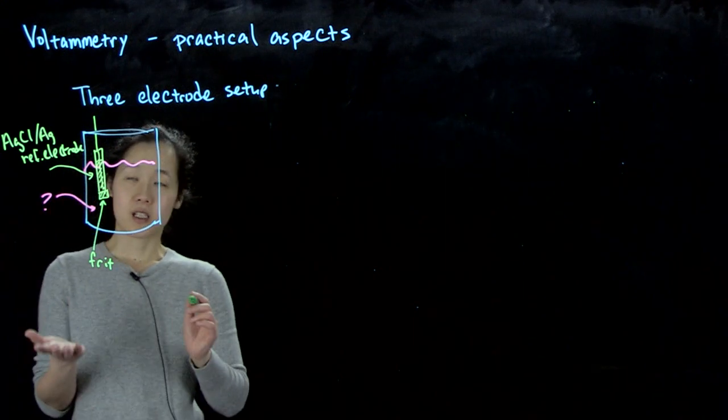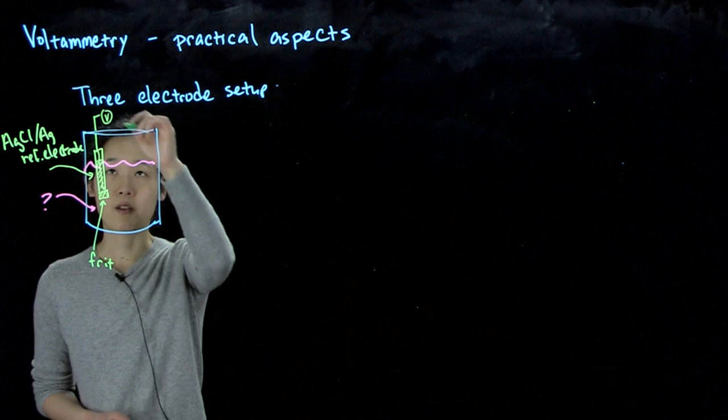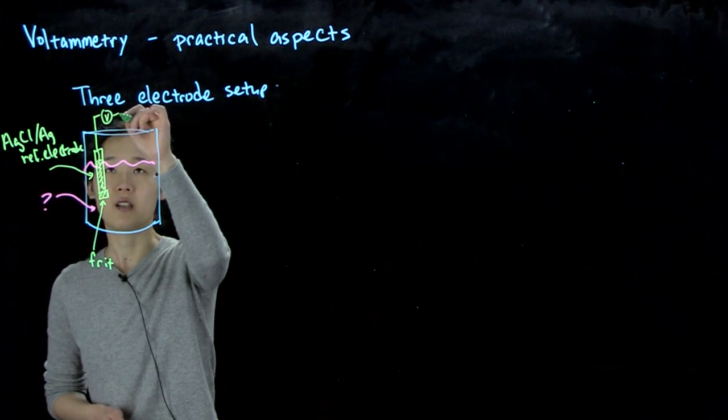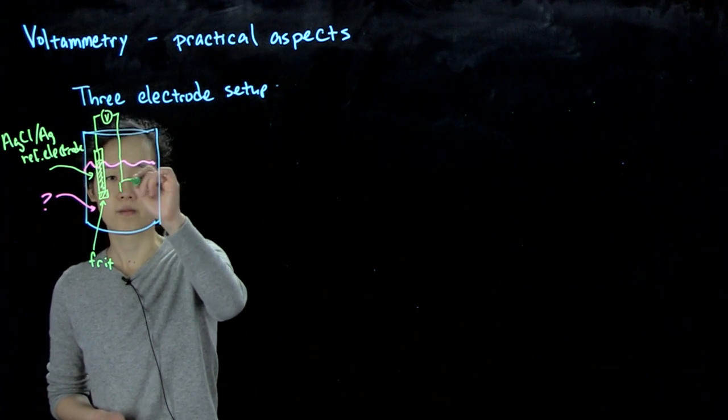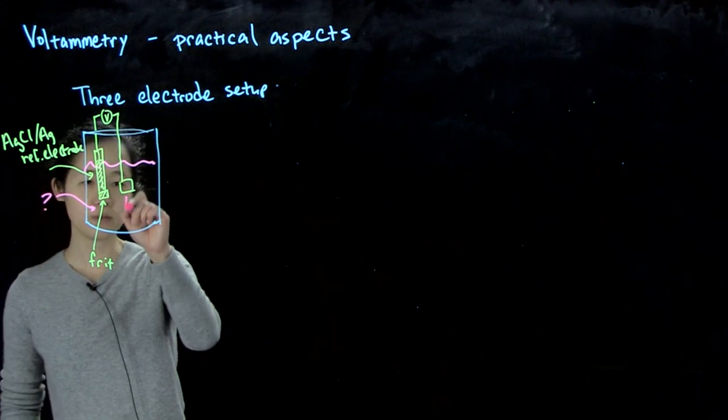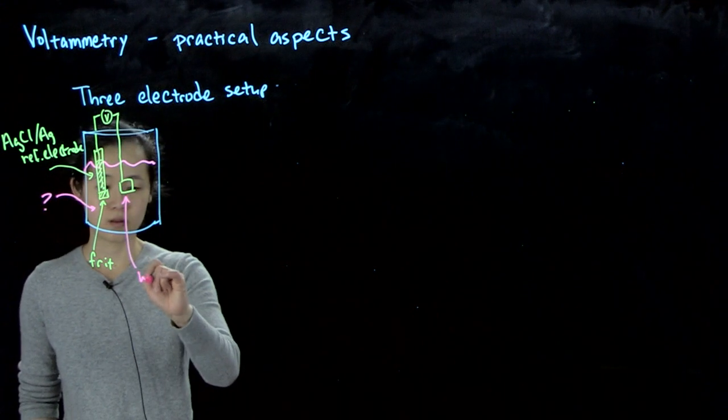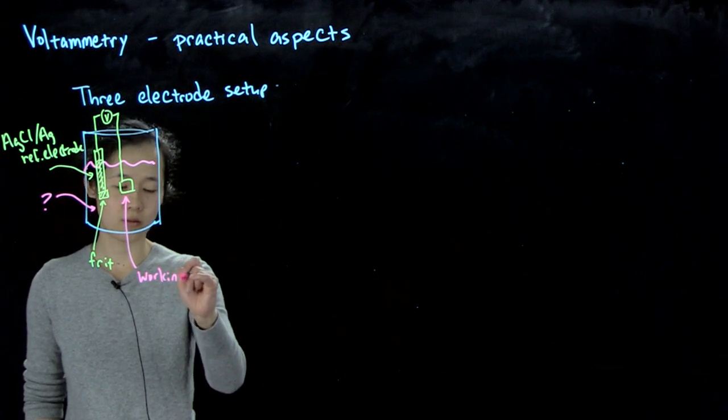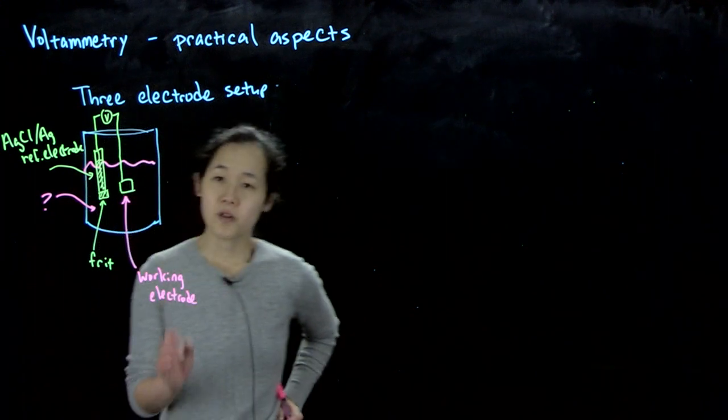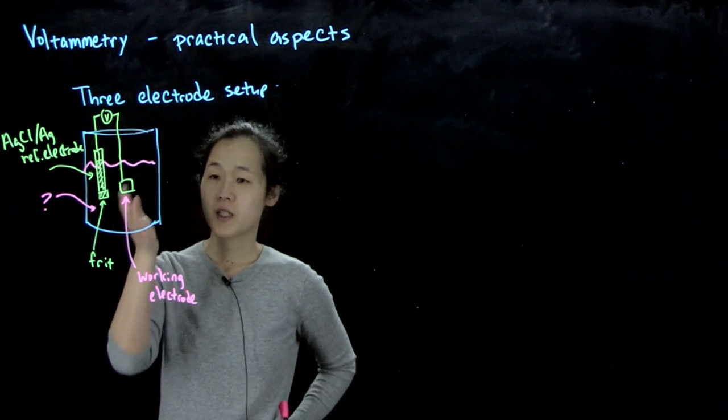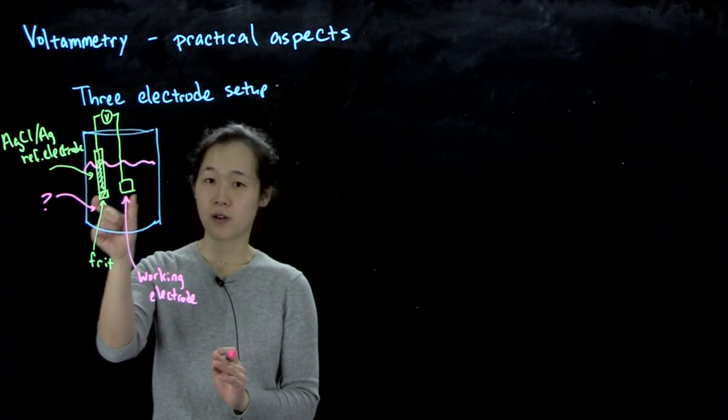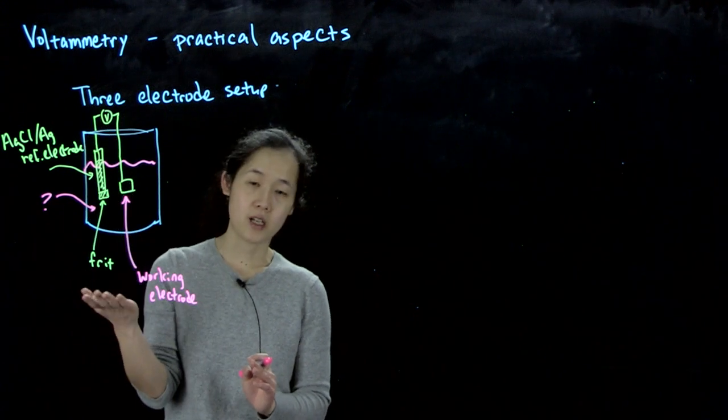Just like in potentiometry, we could put a voltmeter here and measure the difference between this known potential, this cell, and our working electrode. So far, this two-electrode setup is exactly what we have for potentiometry. We'd be able to measure the difference between the working electrode and the reference electrode very accurately.